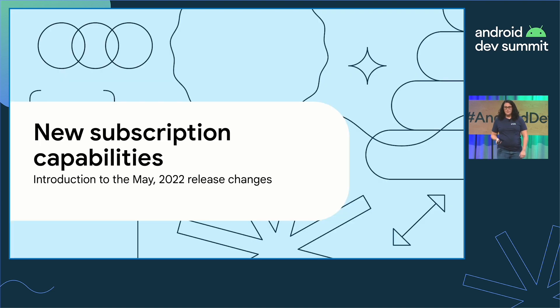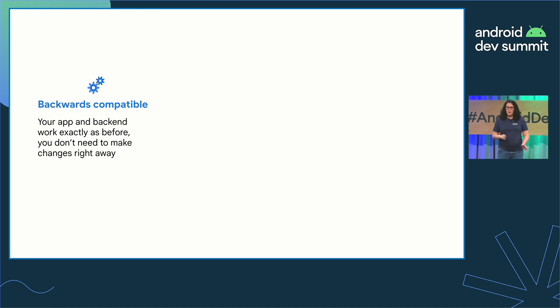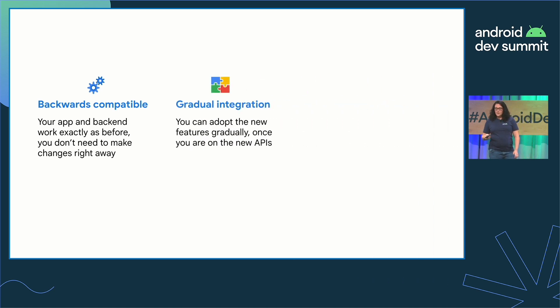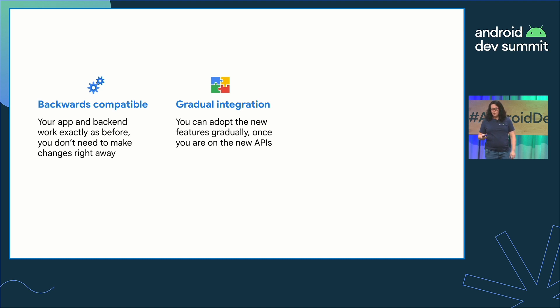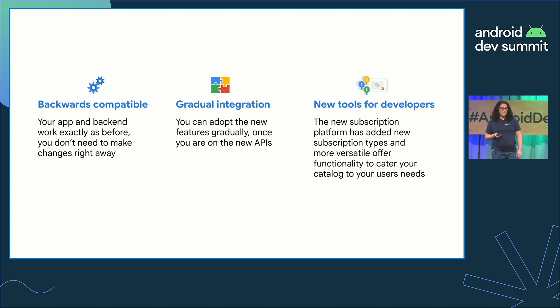The new version was built completely backwards compatible, so your app, your backend integration, and your current subscriptions work exactly as before. You can adopt the new capabilities gradually — once you adopt Play Billing Library 5 and the new backend endpoints, you're ready to add them to your integration little by little. We have introduced new ways to sell and manage your subscriptions, reducing the operational costs associated with creating and managing an ever-increasing list of SKUs.